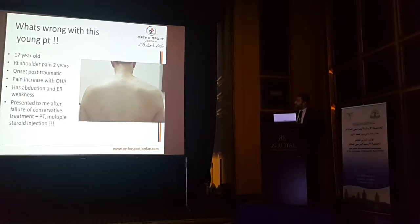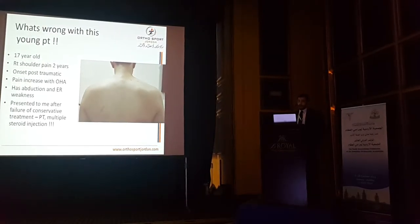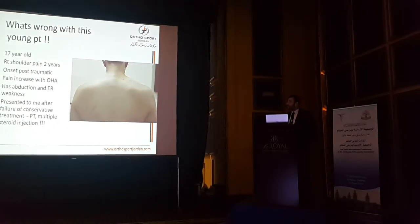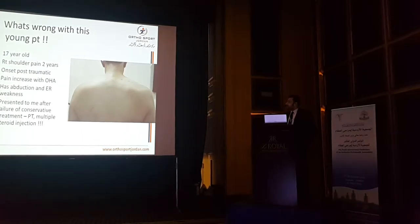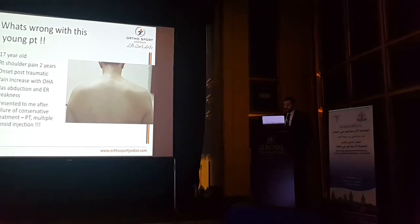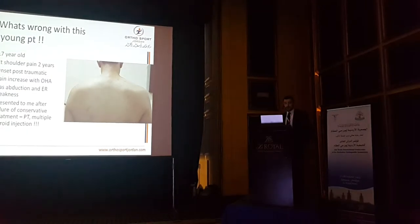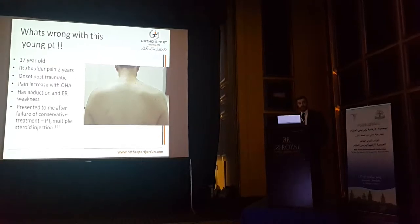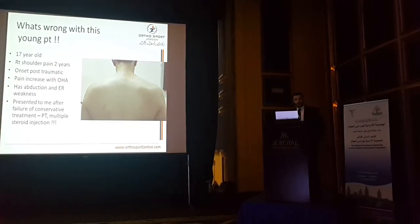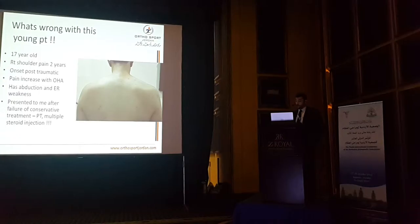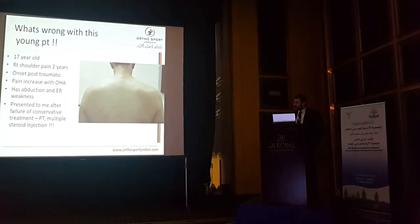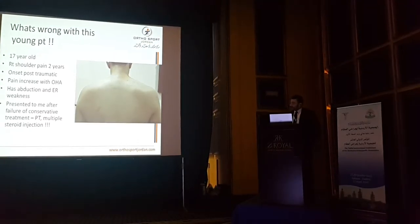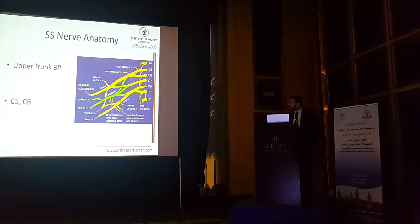What's wrong with this young patient? He's 17 years old, has right shoulder pain for more than two years. Onset was post-traumatic, and he has pain increased with overhead activity. He has abduction and external rotation weakness, and presented to me two years after failure of conservative treatment in the form of multiple steroid injections and physical therapy. So what's wrong? At first instance you may say he has a rotator cuff tear. Let's come back to him at the end of the presentation.